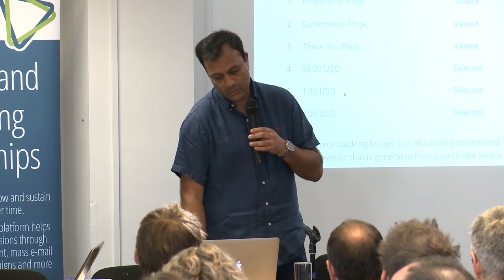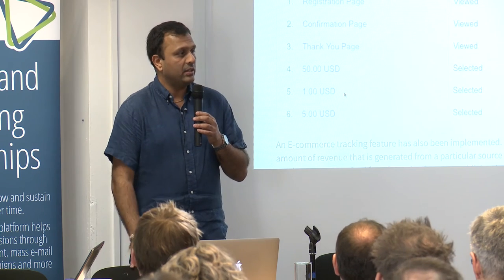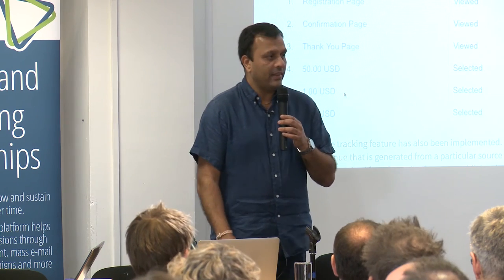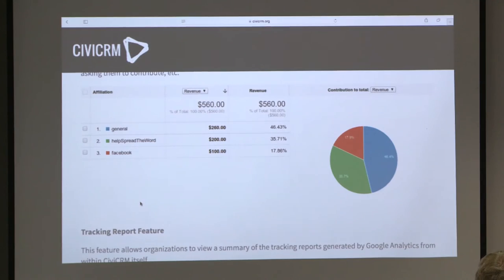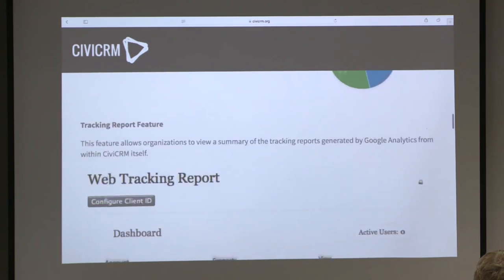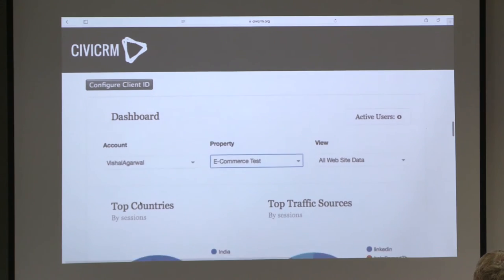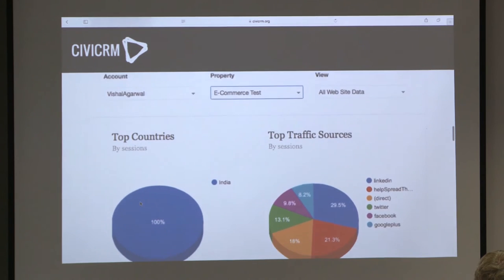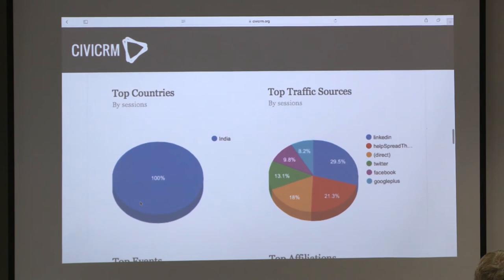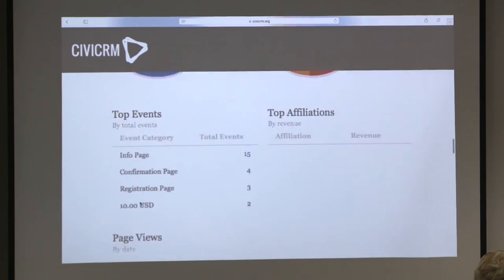Here we can see 19 people started, but only four of them ended up at the confirmation — so there's a quite high dropout rate. You can use other breakdowns too, such as the monetary side: where is the income coming from? If there are people making extra donations during events, you can see that as well. And finally there's the web tracking report within CiviCRM itself — and unless I'm mistaken, that looks like Civi Visualized. The reports it gives you within Civi relate to all of that data.